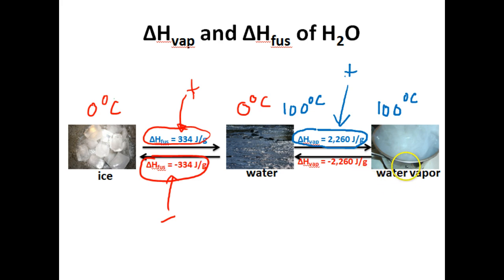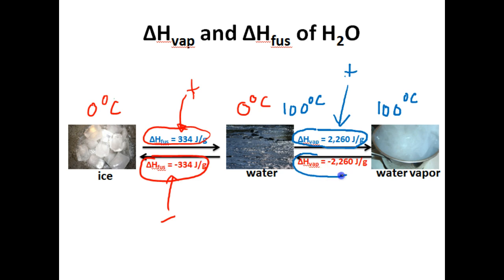Let's look the other way. If we have some water vapor in the gaseous state and we want to condense it and turn it back into water, how much thermal energy must this water vapor lose? The heat of vaporization for water applies here, except the sign is negative. In order for these water vapor molecules to slow down and turn back into water, they must release a certain amount of energy, and whenever we release energy the sign will always be negative.